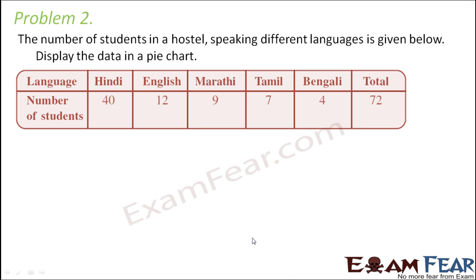Let us look at problem 2. The number of students in a hostel speaking different languages is given below — display the data in a pie chart. The languages are Hindi, English, Marathi, Tamil, and Bengali. The total number of students is 72: 40 speak Hindi, 12 English, 9 Marathi, 7 Tamil, and 4 Bengali. To make a pie chart, please recall the steps. The first step is to draw a circle.